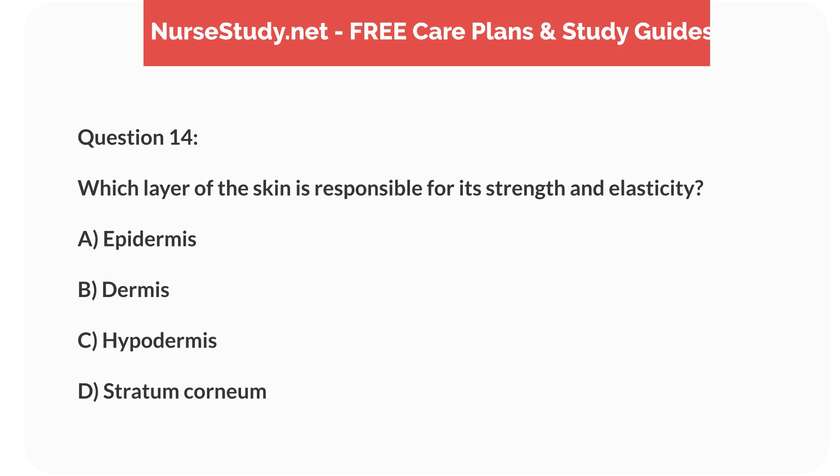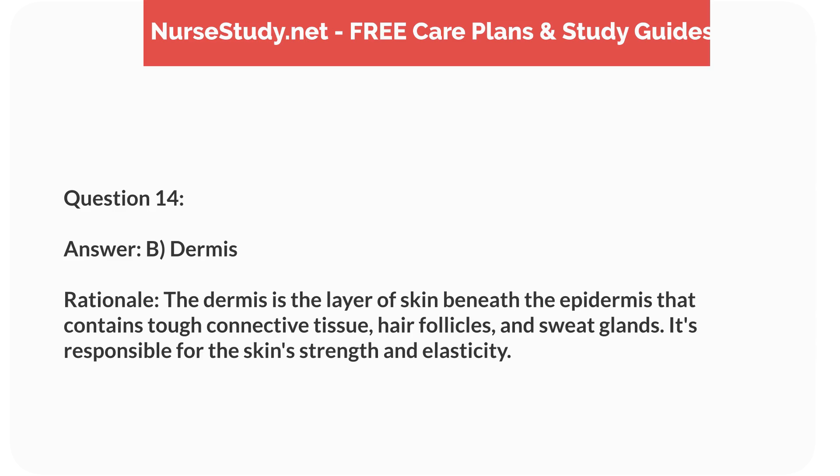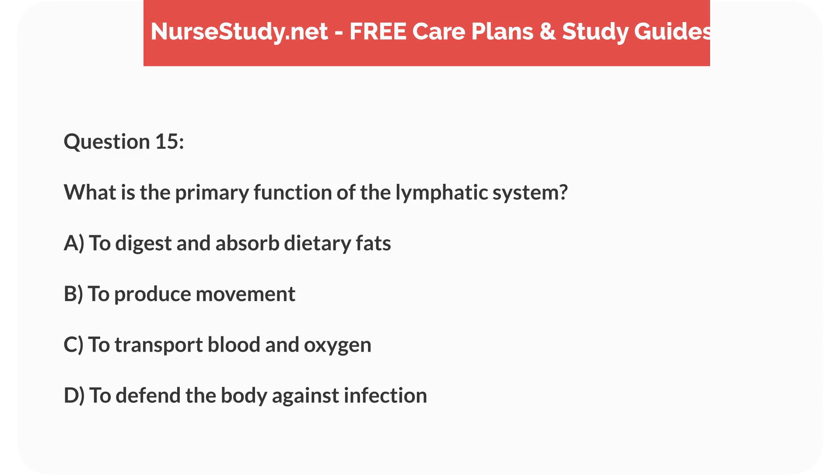Answer: B, dermis. Rationale: The dermis is the layer of skin beneath the epidermis that contains tough connective tissue, hair follicles, and sweat glands. It is responsible for the skin's strength and elasticity. Question 15: What is the primary function of the lymphatic system? A) to digest and absorb dietary fats, B) to produce movement, C) to transport blood and oxygen, D) to defend the body against infection.